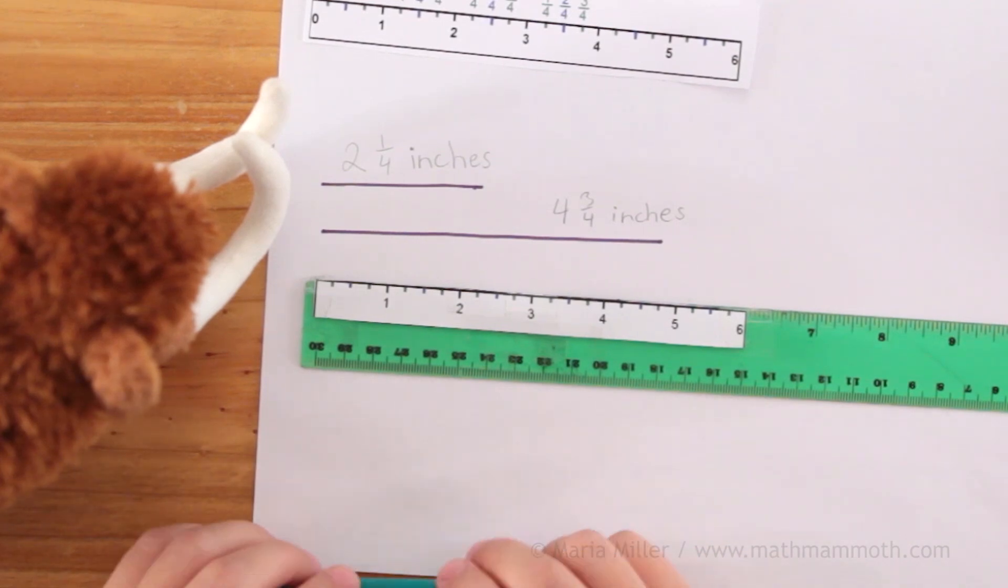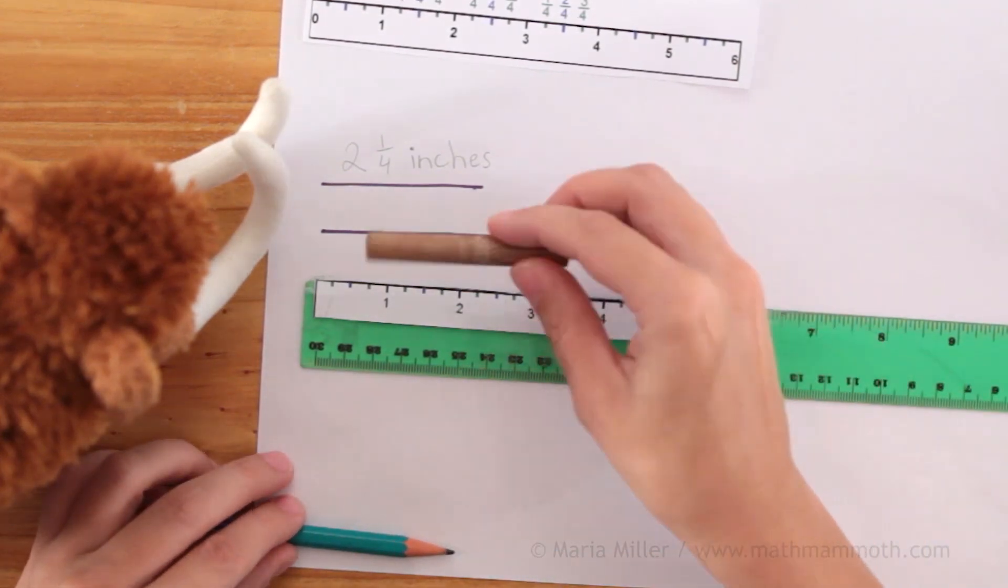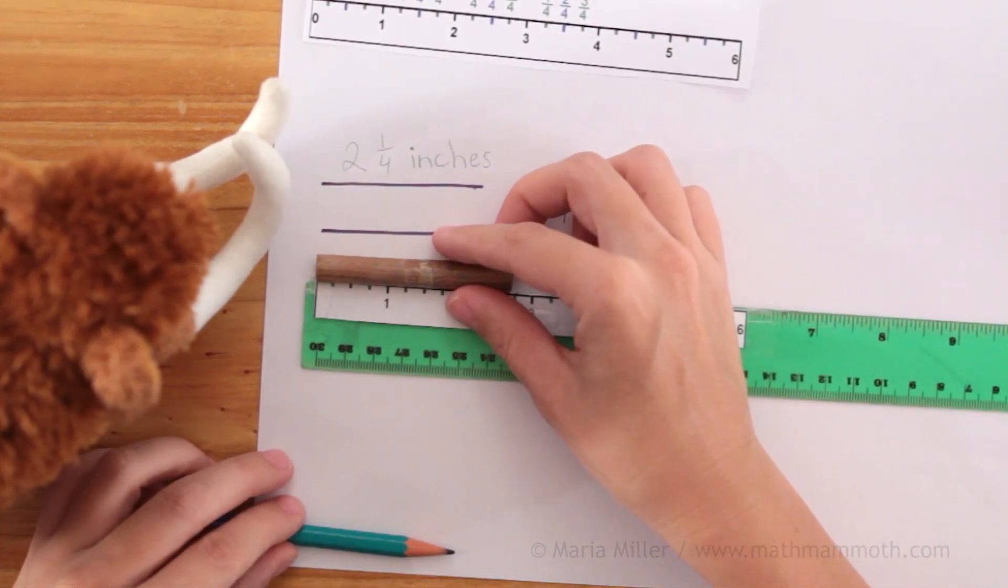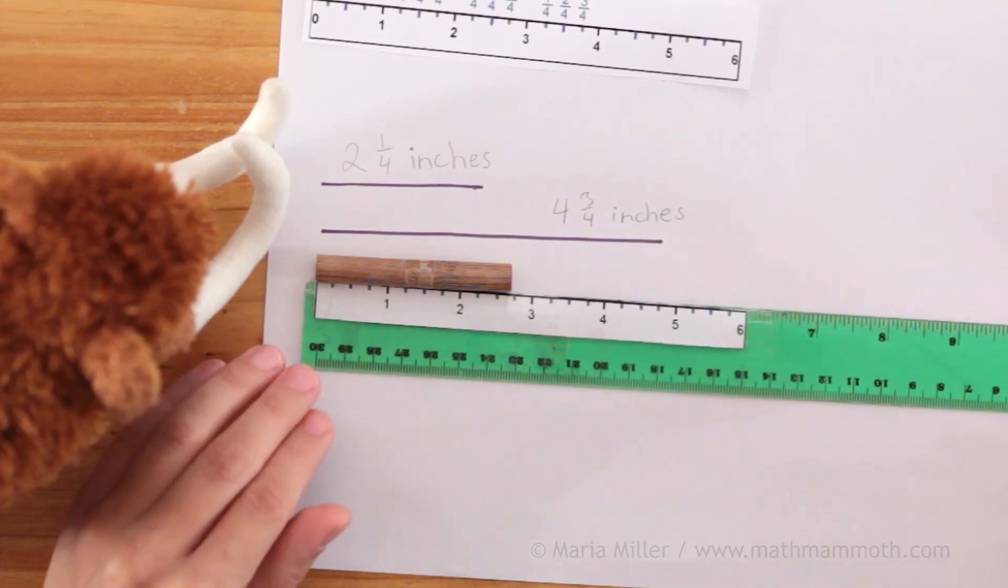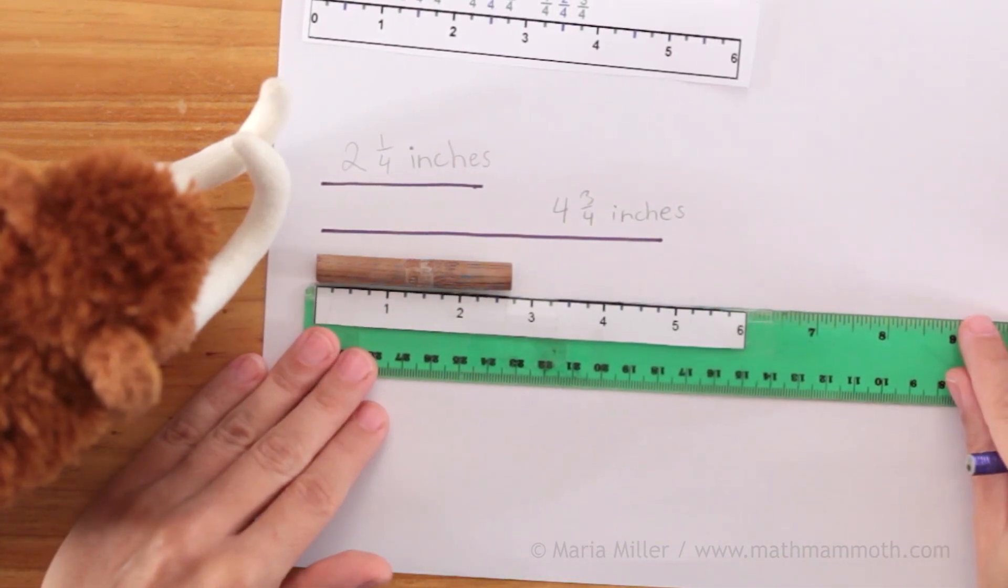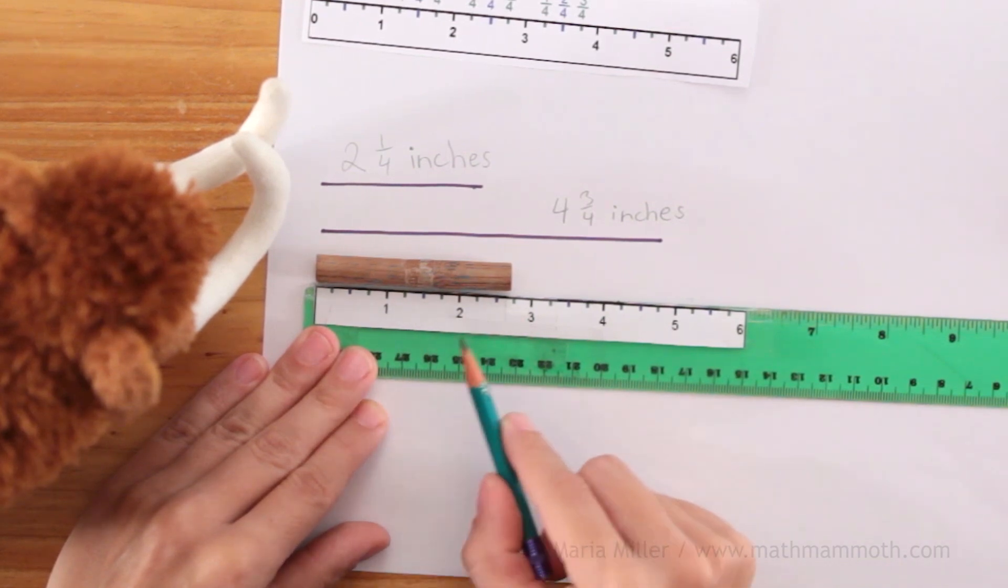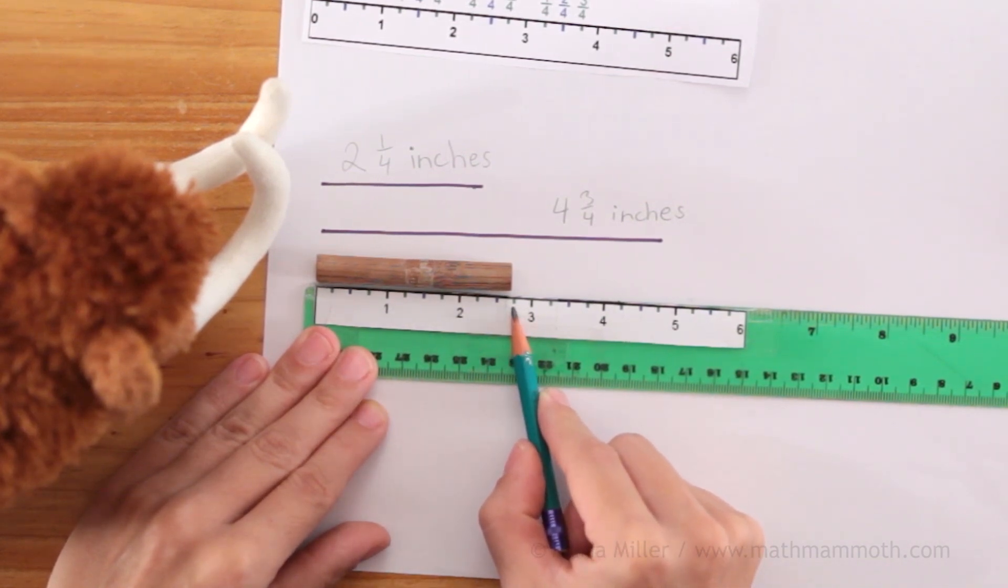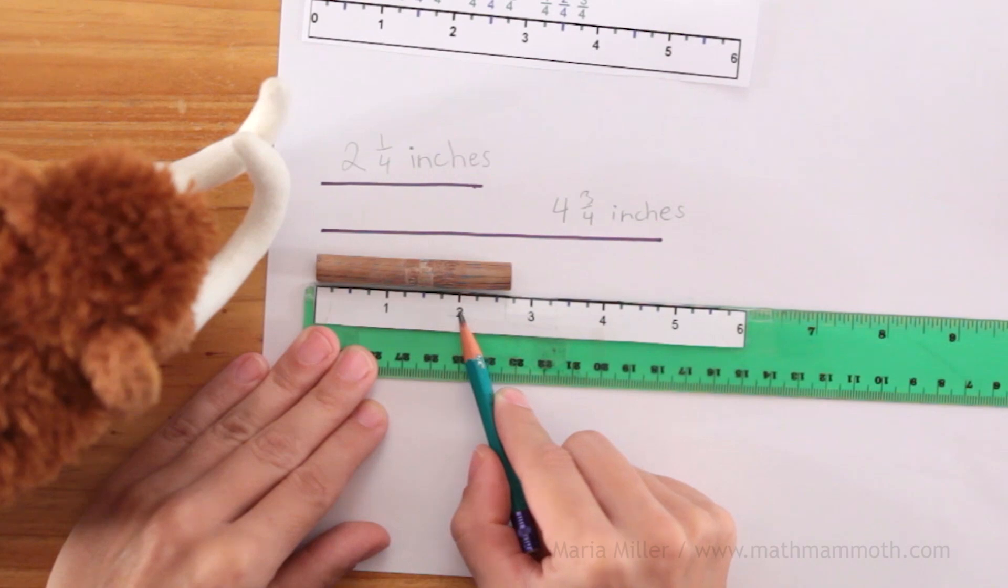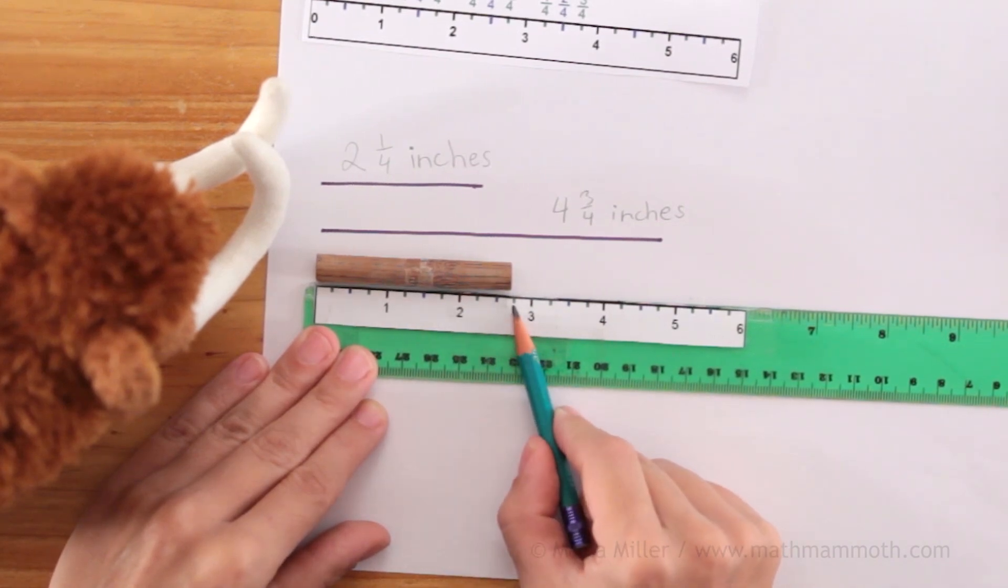Now let's measure a few other things I have here. Okay, now this one is not exactly anywhere on these marks. It is between this blue and this green mark but closer to the green one. So this green one here is for the three-fourths of an inch, right? So this is about two and three-fourths of an inch.